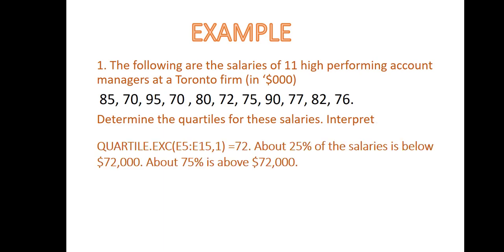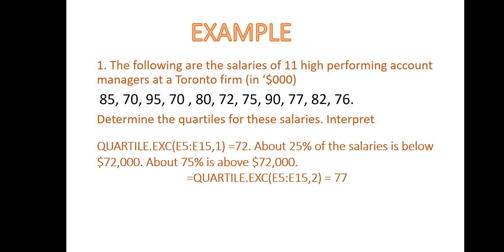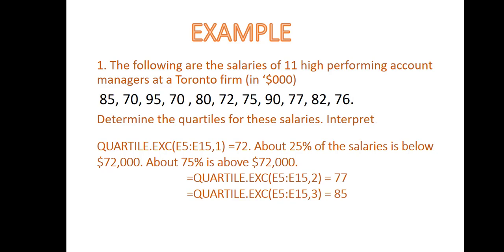Based on the results from Excel, Q1 is 72, meaning about 25 percent of the salaries is below $72,000 and about 75 percent is above it. Q2 is 77, meaning about 50 percent of the salaries is below $77,000 and about 50 percent is above it. For Q3 we can say that about 75 percent of the salaries is below $85,000 and the remaining 25 percent is above it. Thank you for watching this video.